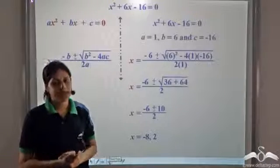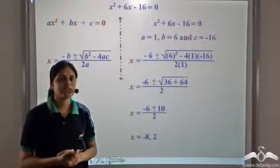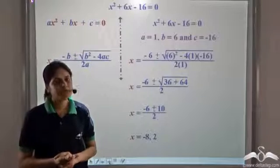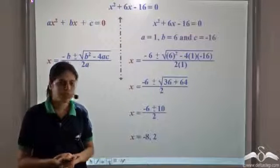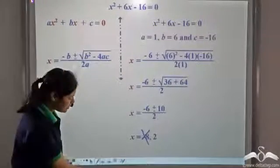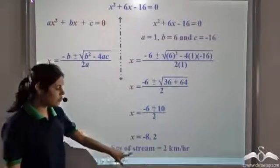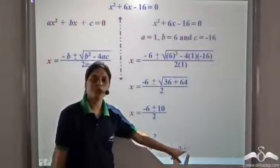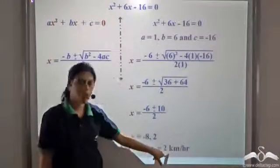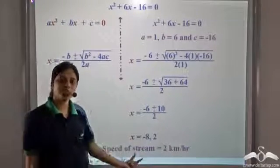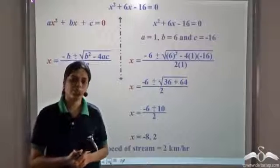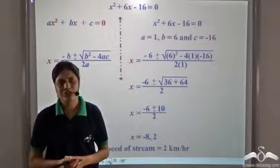Recall that x was the speed of the stream, and speed cannot be negative. So we discard x equals negative 8 and take the speed of the stream as 2 km per hour. This is the required value of the unknown. This is how we can solve such word problems using quadratic equations.